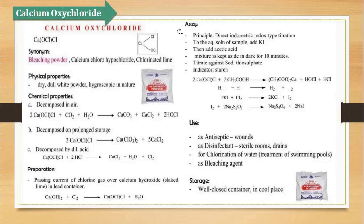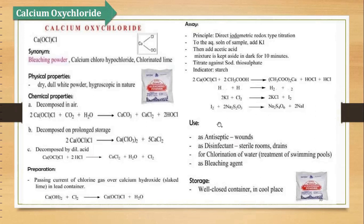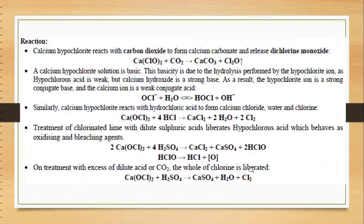Then its assay: direct iodometric redox type of reaction. Iska solution banayenge in potassium iodide, usme acetic acid ka standard solution add karenge, us mixture ko dark mein rakho for 10 minutes, then titrate kar do with sodium thiosulfate using starch as indicator. Calcium oxychloride aur acetic acid ka reaction: calcium acetate, HOCl aur HCl banta hai. Usi tarah potassium iodide ka solution liya tha to wo sodium thiosulfate ke saath react karega, aur starch ki wajah se uska color change aa jayega. Uses: it is used as antiseptic, disinfectant, chlorination of water mein use karte hain, bleaching agent ki tarah use kiya jaata hai.